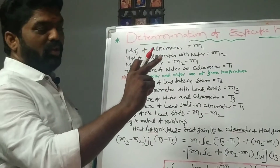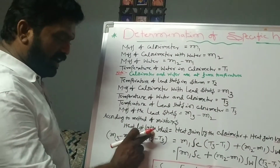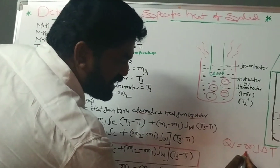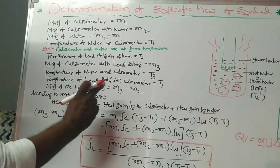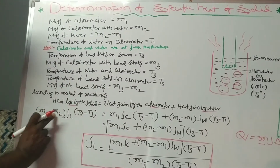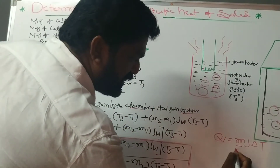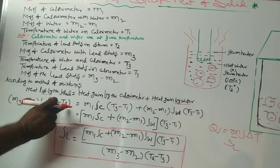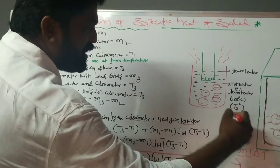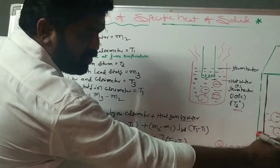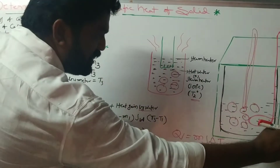This formula Q = M·S·ΔT is applicable to all three substances. For the lead shot, M is the mass of lead shots which is m3 minus m2, S is the specific heat of lead SL, and ΔT is the change in temperature. The initial temperature of lead shots in steam is T2, and when dropped into cool water the temperature becomes T3. Since T2 is highest and T3 is lowest, ΔT equals T2 minus T3.